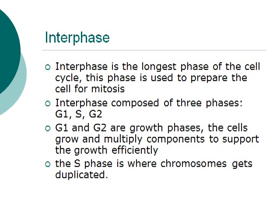The first phase I'm going to talk about is the interphase. Interphase is the longest phase of the cell cycle. This phase is used to prepare the cell for mitosis. Interphase itself is composed of three sub-phases: G1, S, and G2. G1 and G2 are growth phases, where the cells grow and multiply components to support the growth efficiently.